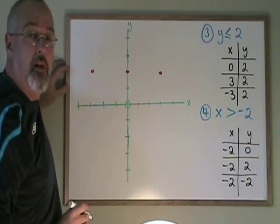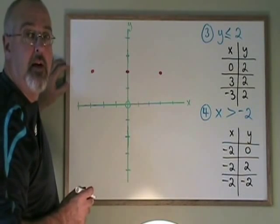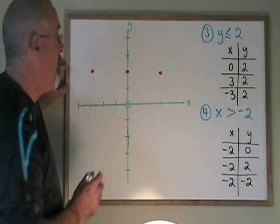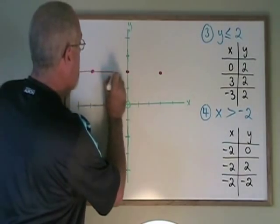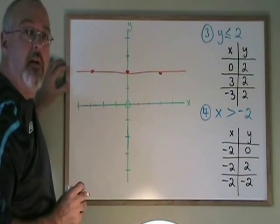It's time to draw my line. I look at the symbol and I see it has the or equal to line under it. That means I need to draw a solid line. And I do so. That means that the points on the line are part of the answer.